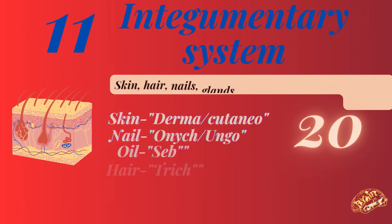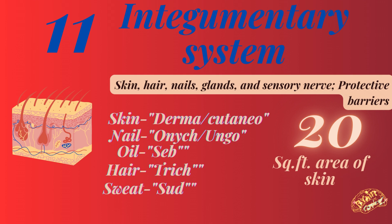Number eleven: the integumentary system. It involves skin, hair, nails, glands, and sensory nerves as protective barriers. Skin is termed as 'derma' or 'cutaneo', nail as 'onycho' or 'ingo', oil as 'seb', hair as 'tricho', and sweat as 'sud'. The area of skin is 20 square feet, making skin the largest organ by area.